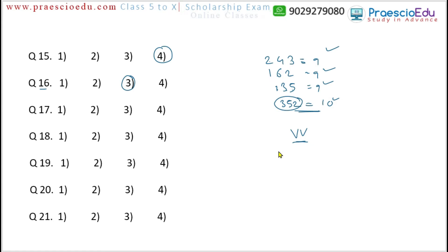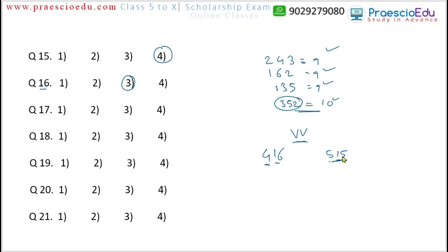Question 17: option 1 is 416, option 2 is 515. For 416, the hundreds digit is 4, and 4 squared is 16, giving the remaining digits. For 515, 5 squared is 25, not 15. For 864, 8 squared is 64, and for 749, 7 squared is 49. So 515, option 2, is the different one.